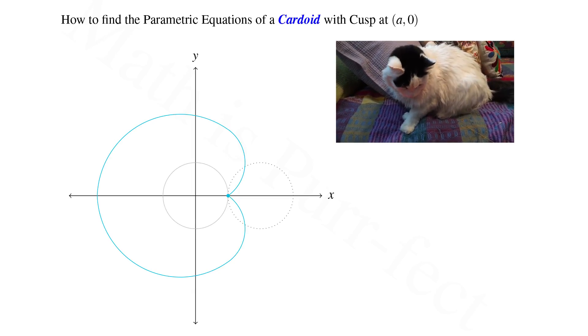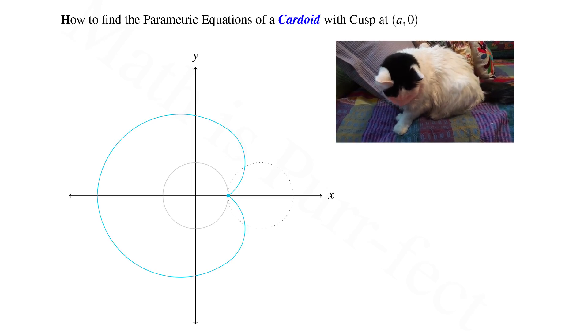Once our second circle has come back to its starting position, the cardioid is complete.